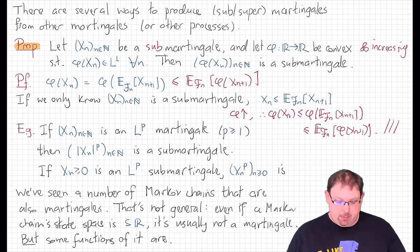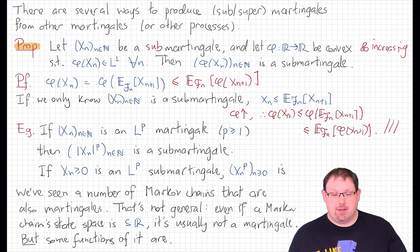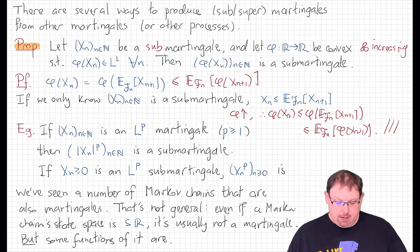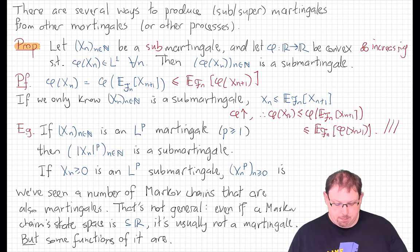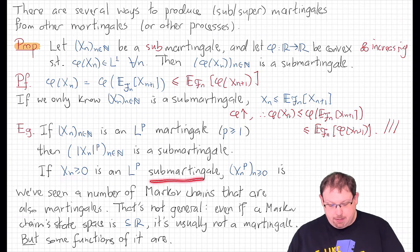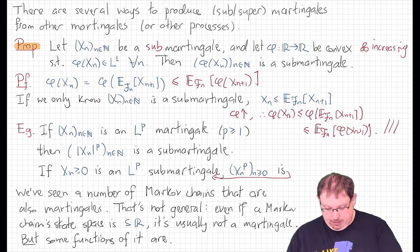One nice place this will come up frequently is when our function phi of x is x to the p, which is convex for all p greater than or equal to one, even if we take absolute values first. So for example, if we know that x_n is an L^p martingale with p at least one, then the sequence |x_n|^p is a sub-martingale. And since x to the p is also increasing, we can take x_n to be any non-negative L^p sub-martingale and still find that the sequence of p-th powers is a sub-martingale.